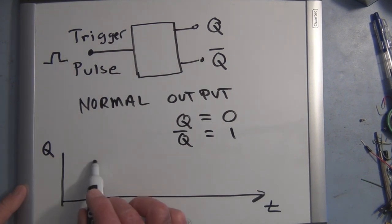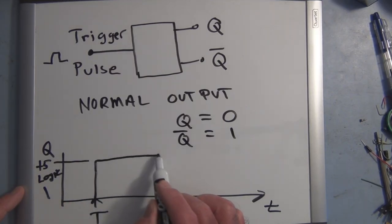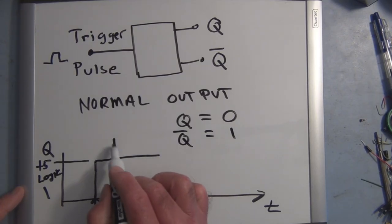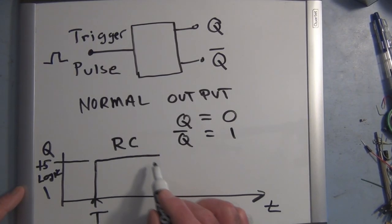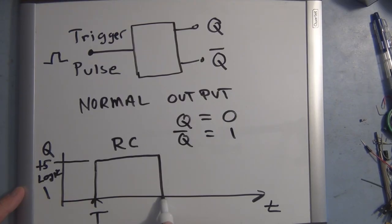At some time, say right here we get the trigger, you see that what happens is Q will switch over to this quasi stable state, we'll call this 5 volts or logic 1, for a certain period of time determined by an RC time constant, and then once that period of time is ended it'll switch back to the normal stable state.